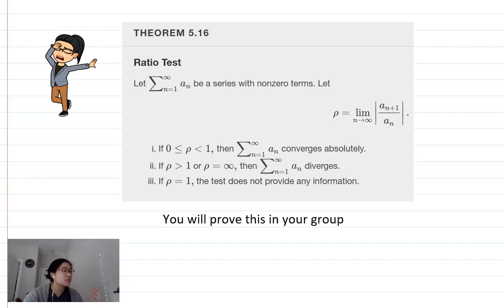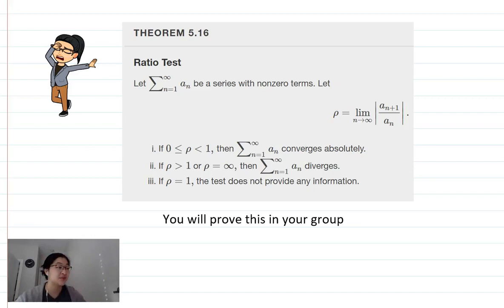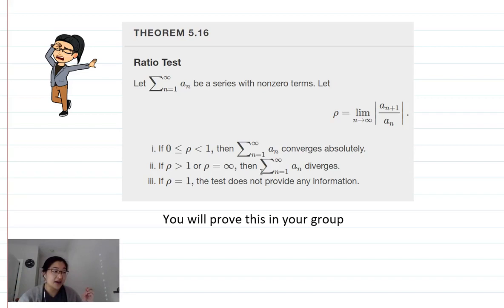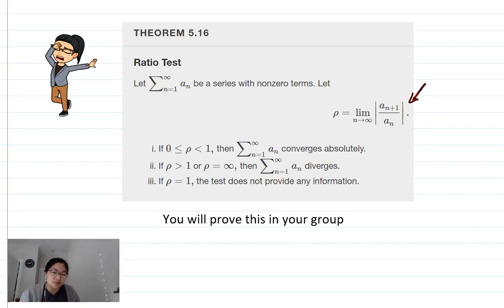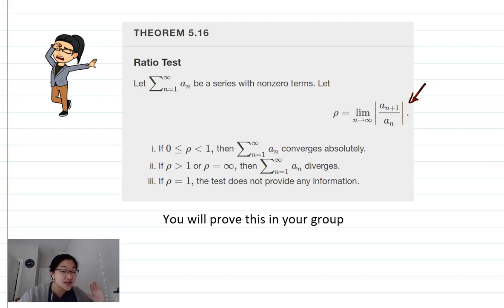The ratio test looks at a ratio. We look at the ratio of the next term over the current term — an arbitrary next term — and we take the limit of the absolute value of that. So the signs, we just don't care about them. Signs don't matter. If the limit is a number between 0 and 1, then we have a series that converges absolutely.